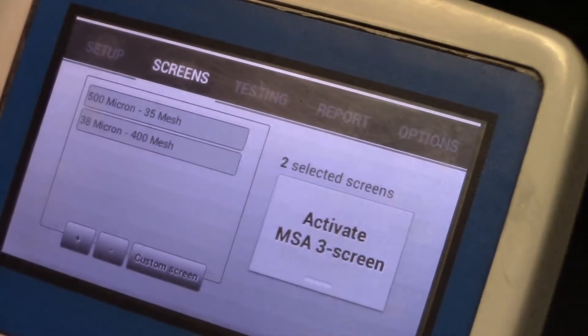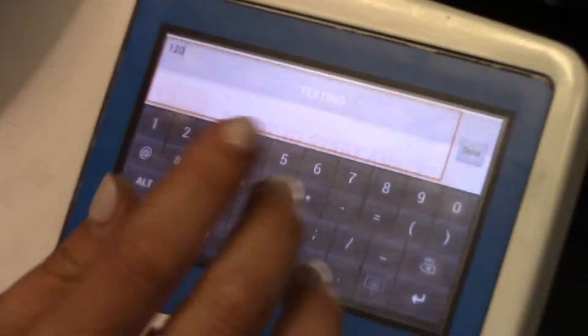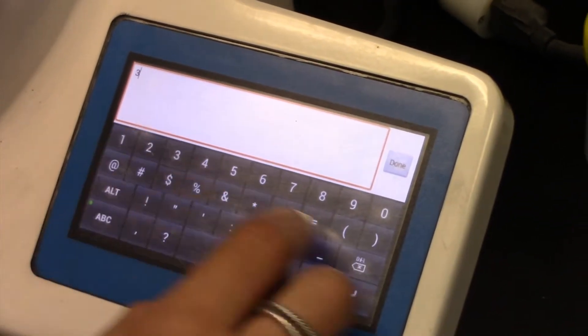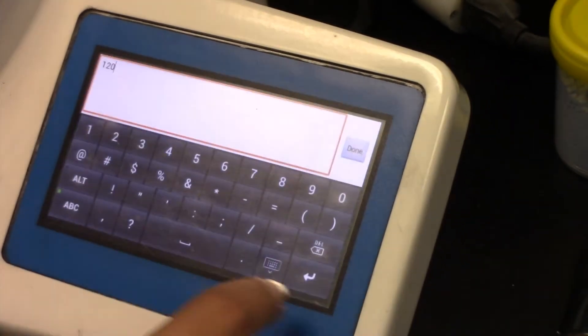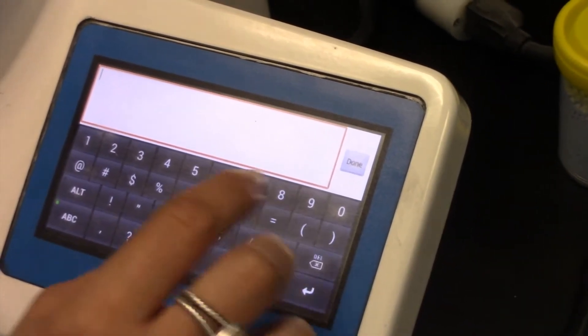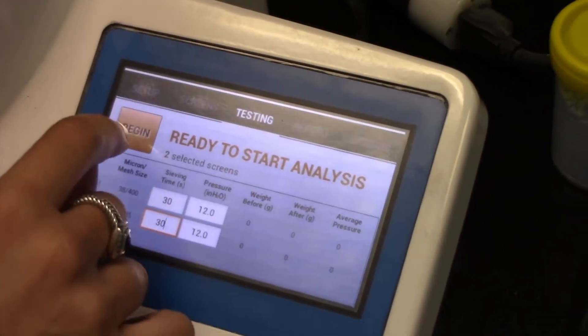From here, go to the testing page. For testing purposes, I'm going to enter in a 30 second sieve time for each sieve screen and I will leave it at 12 inches water pressure for both. Then we're going to press begin.